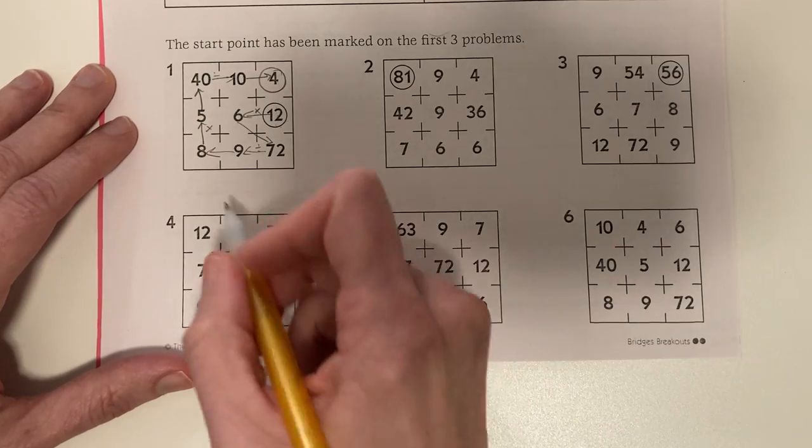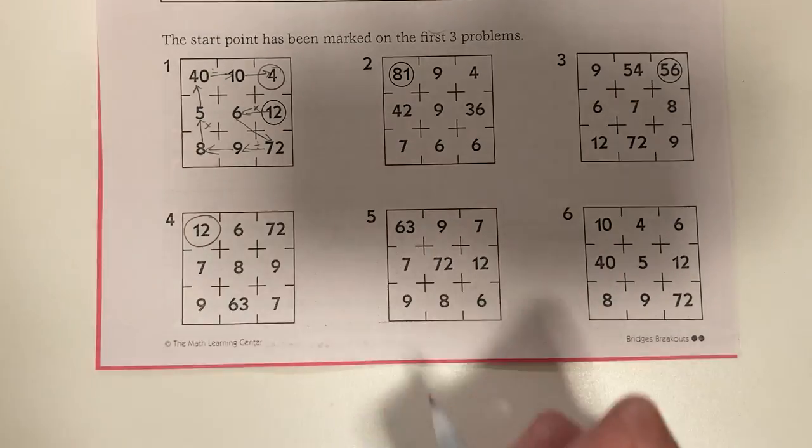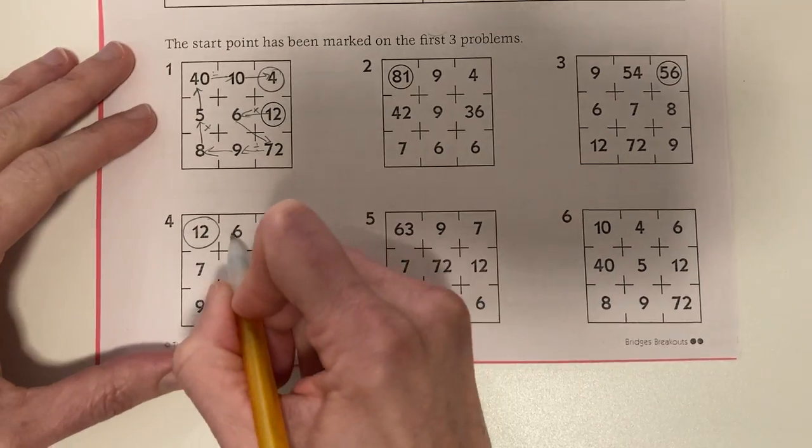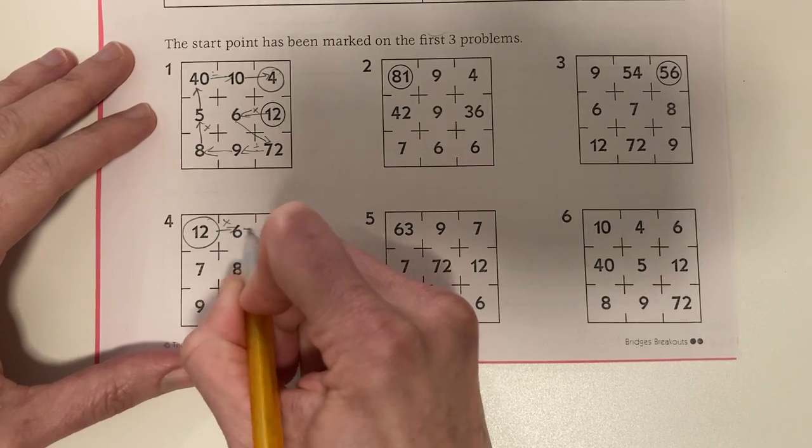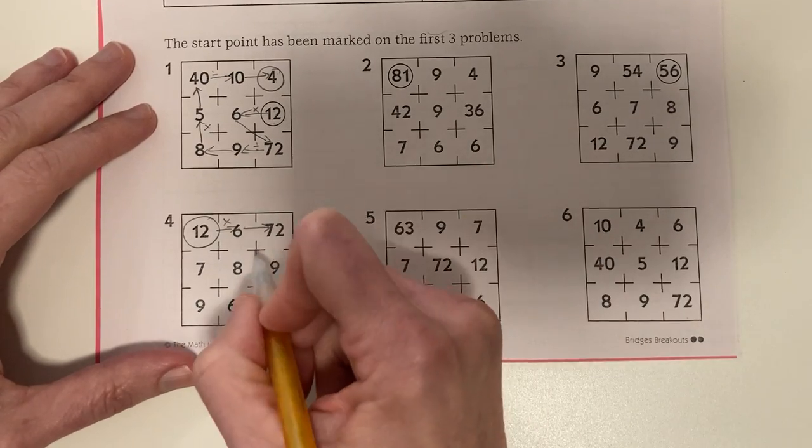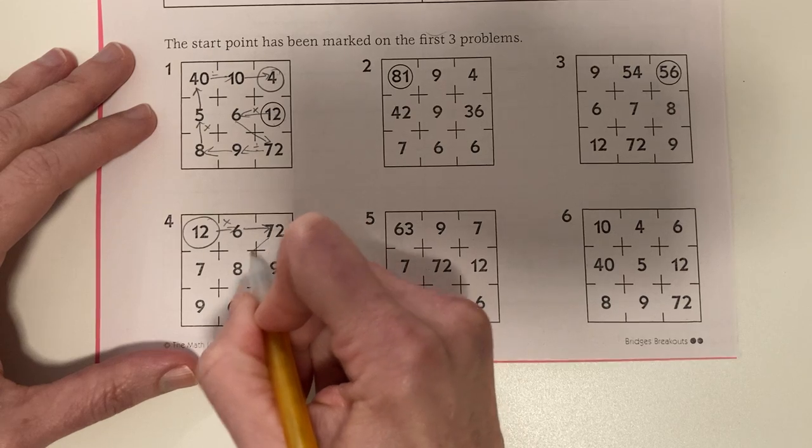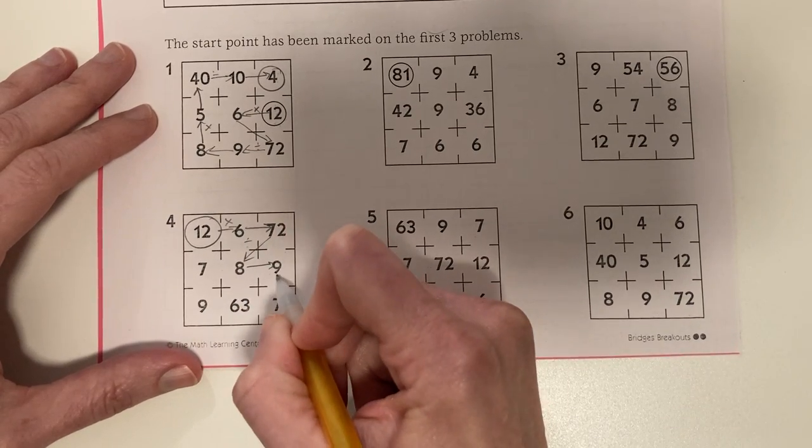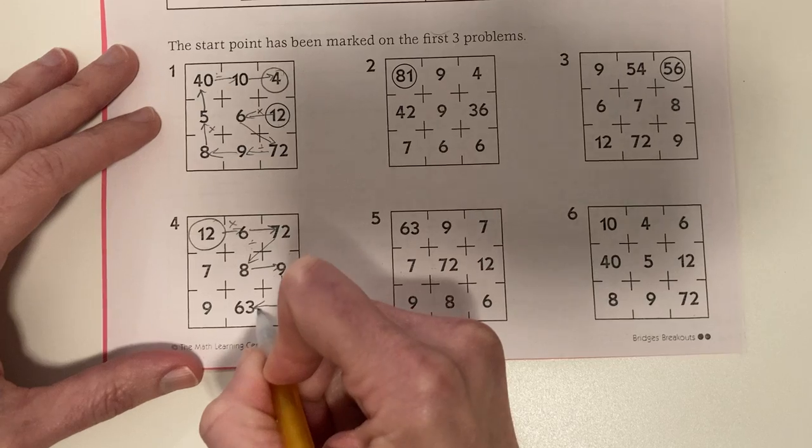So here's one way you can do number 4. You could start with a 12. 12 times 6 is 72. 72 divided by 8 is 9. 9 times 7 is 63.